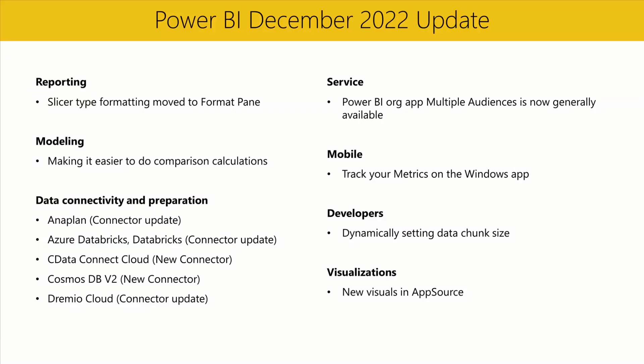We've also introduced two new helper functions: order by and partition by. These helper functions can only be used in functions that accept an order by or partition by parameter, which are the functions previously mentioned. The partition by function defines the columns that will be used to partition the rows on which these functions operate. The order by function defines the columns that determine the sort order within each of a window function's partitions as specified by partition by.